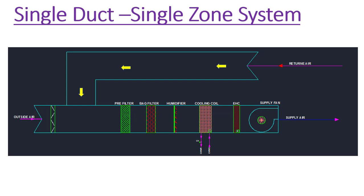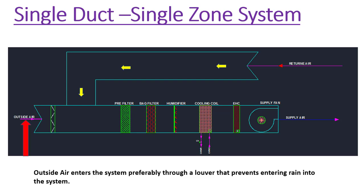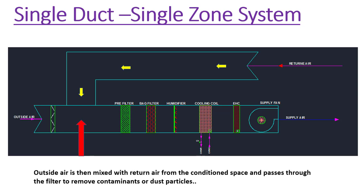For simplicity, we will explore an example of a single duct single zone system. This diagram shows a recirculating type AHU serving a single zone with a single supply duct. Let's look at each component one by one. Outside air enters the system preferably through a louver that prevents rain from entering. This outside air is then mixed with return air from the conditioned space and passes through a filter to remove contaminants and dust particles.